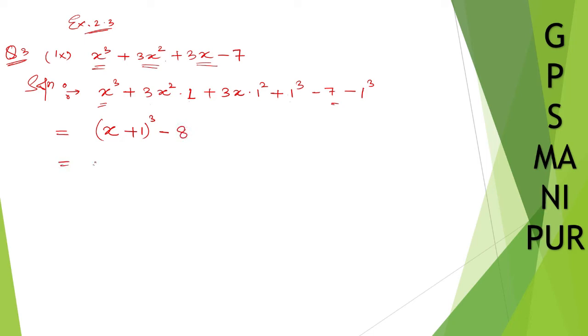Now x plus 1 whole cube and 8 I can write down as minus 2 whole cube. Now a cubed minus b cubed, a cubed minus b cubed I can write down as a minus b, a squared plus ab, ab will be x plus 1 into 2, ab plus b squared, that is 2 squared, close the bracket.